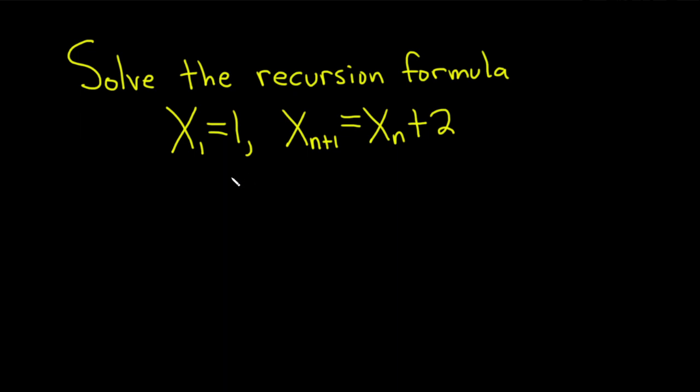The goal is to find a formula like X sub n equals some stuff that doesn't depend on previous terms. We want basically a formula for X sub n that is not recursive.